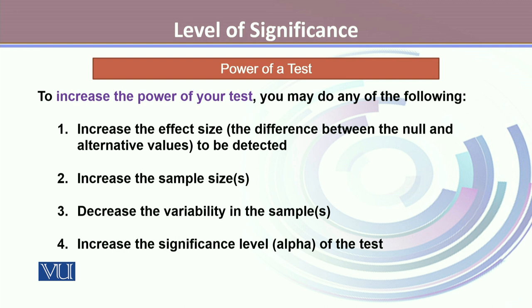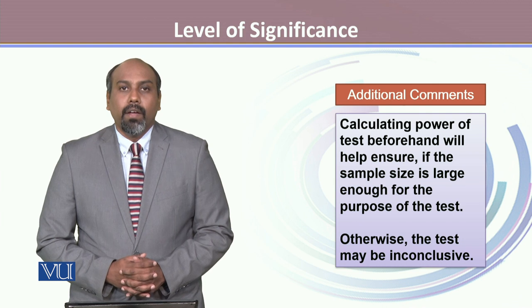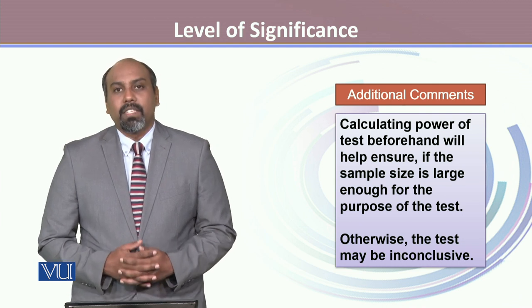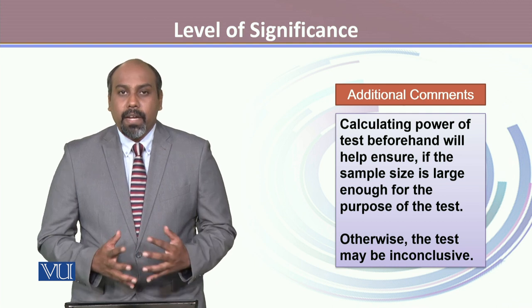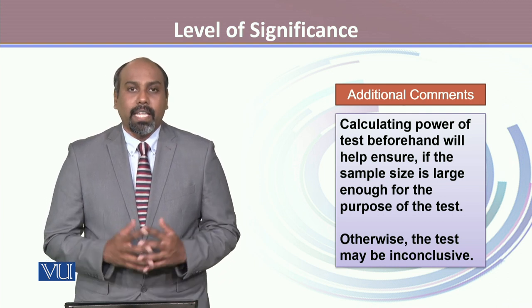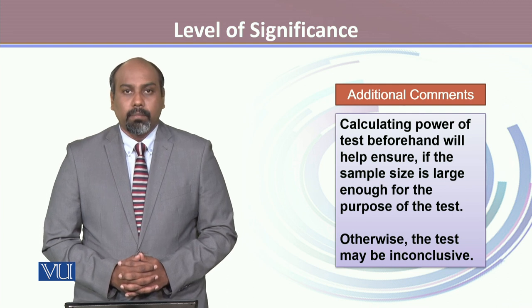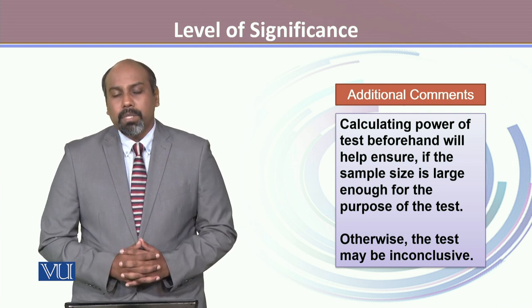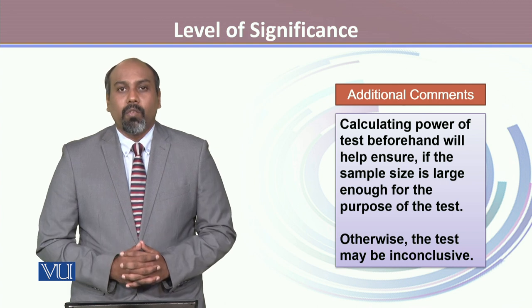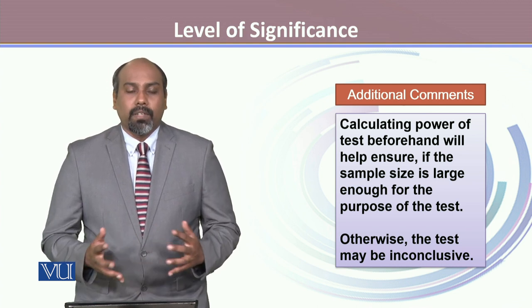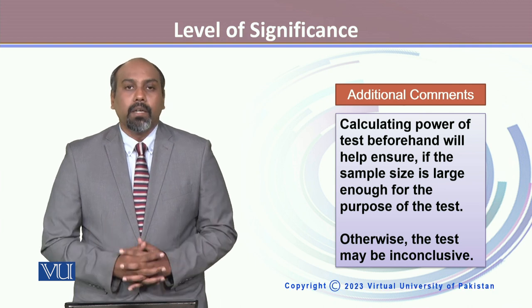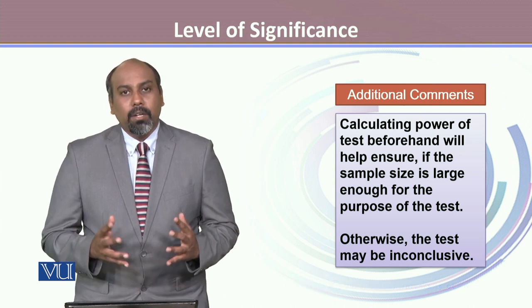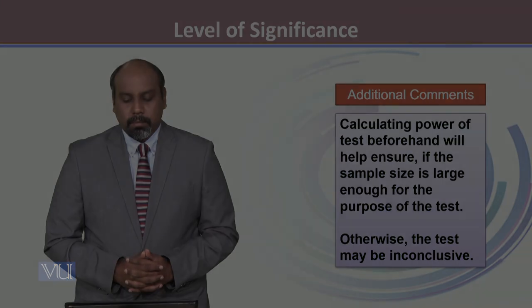An imbalance adversely affects the power of the test. Calculating the power of the test beforehand will help ensure the sample size is large enough to identify the difference or effect we are interested in. Sometimes people try to measure the power of the test after they have collected the data — we call it post hoc power calculations — but they are not highly recommended.